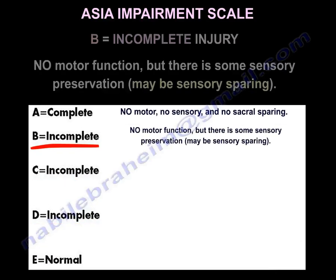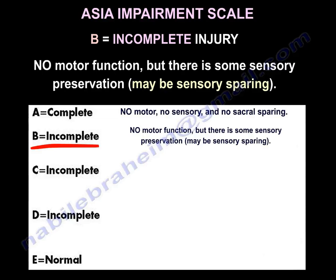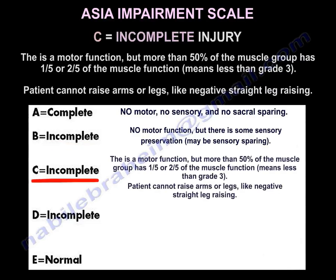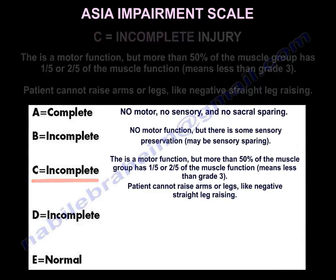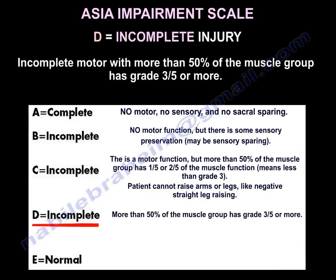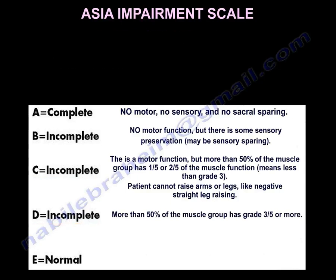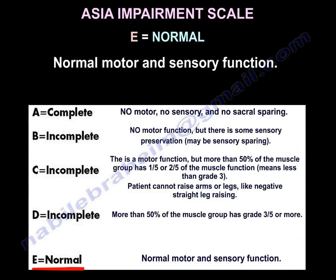Grade B incomplete: no motor, but some sensory preservation or sensory sparing. Grade C incomplete: there is motor function, but more than 50% of the muscle group has 1/5 or 2/5 muscle function, meaning less than grade 3 - patient cannot raise the arms or legs. Grade D incomplete: more than 50% of the muscle group has 3/5 or more. Grade E is normal motor and sensory function.